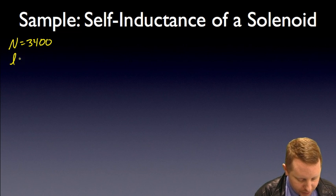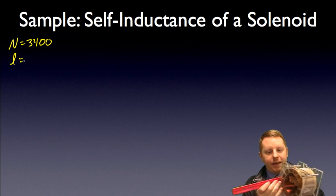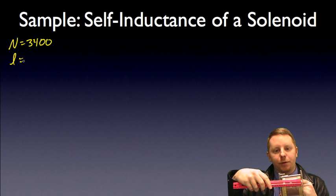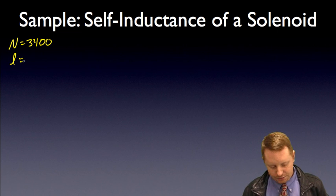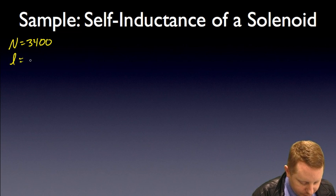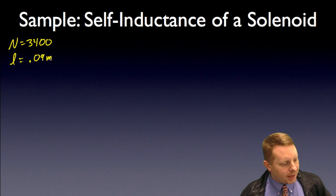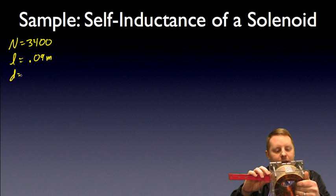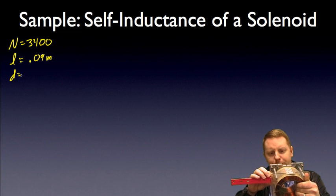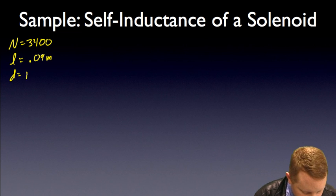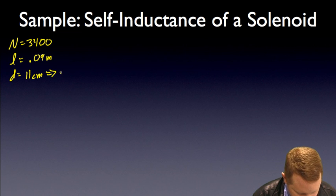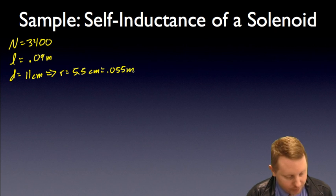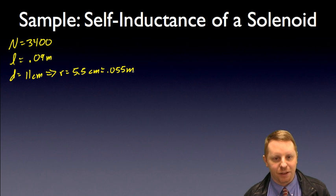Now we're also going to need to know the length. I'll measure the length of my solenoid and I come up with 9 centimeters. So that's going to be .09 meters. I also need to know the radius. First I'm going to measure the diameter of my solenoid. As I look at that, it looks like its diameter is about 11 centimeters. So if I have a diameter of 11 centimeters, that means the radius is 5.5 centimeters or .055 meters.